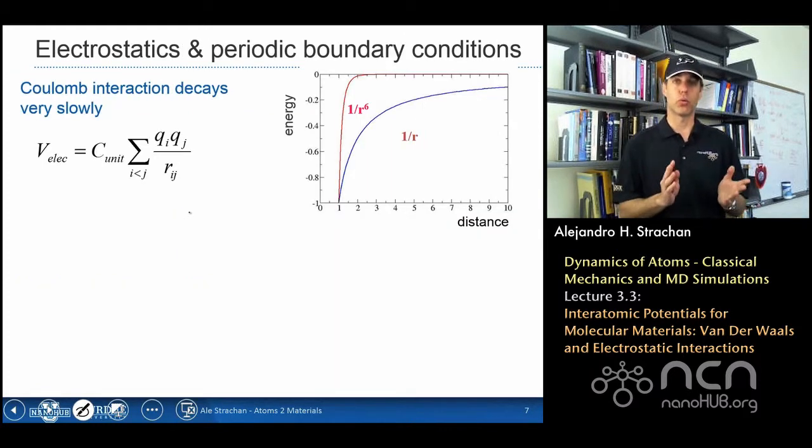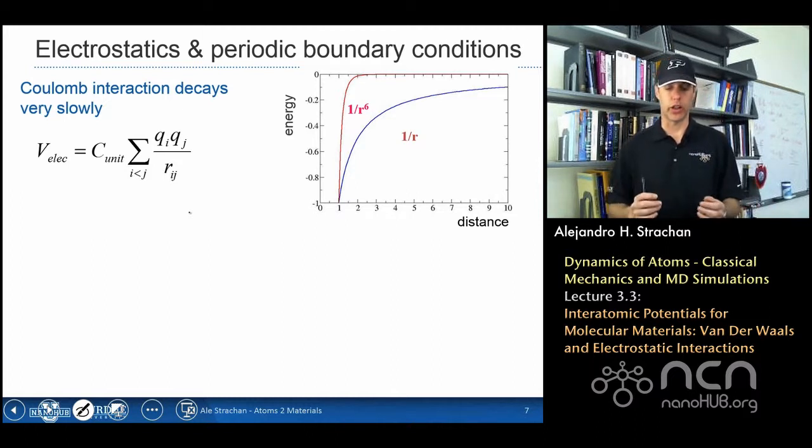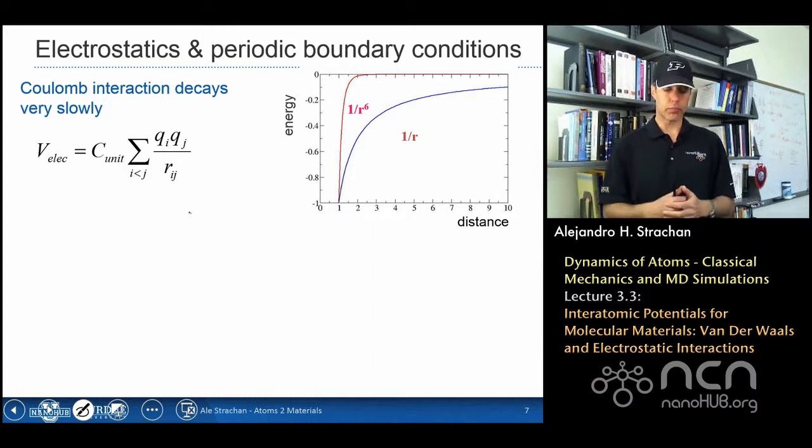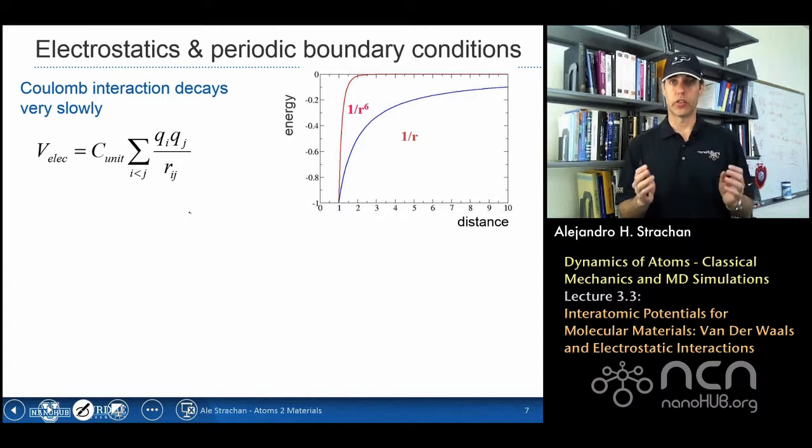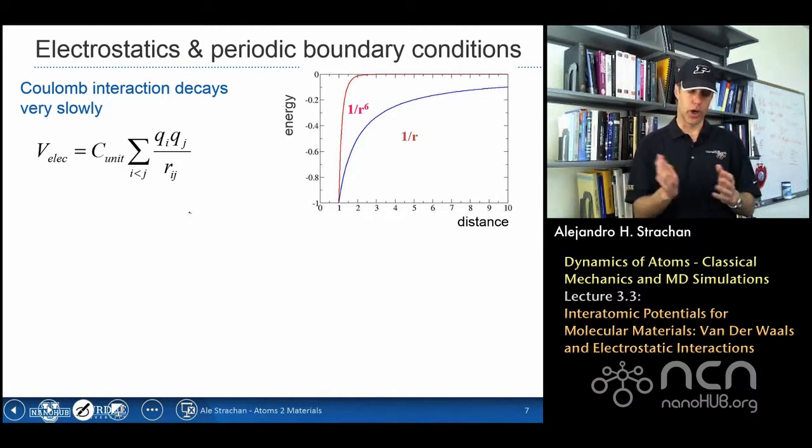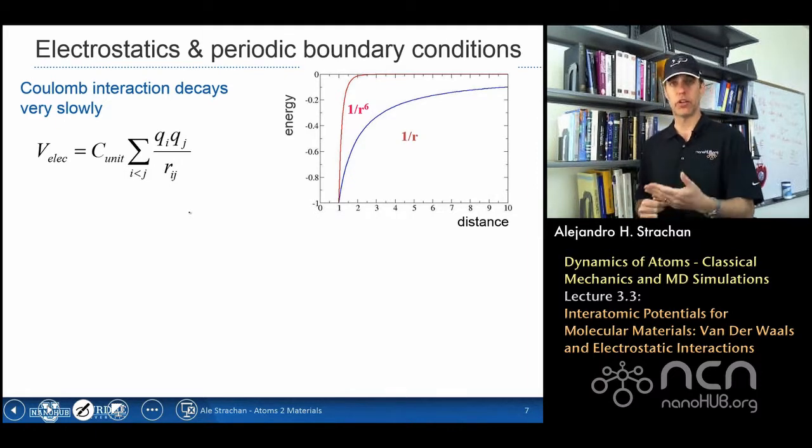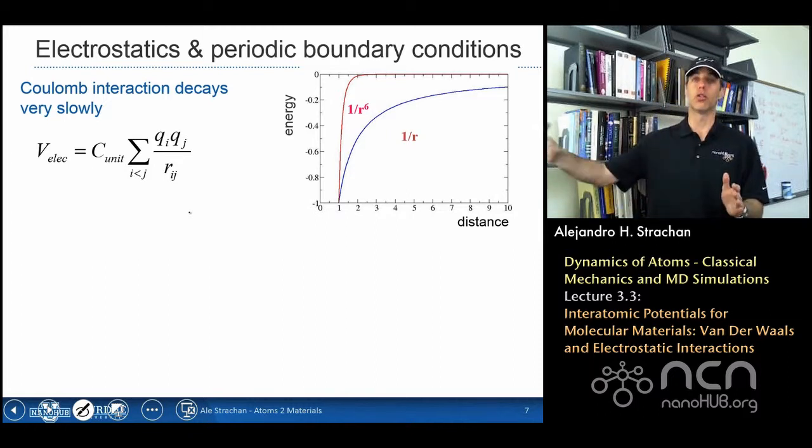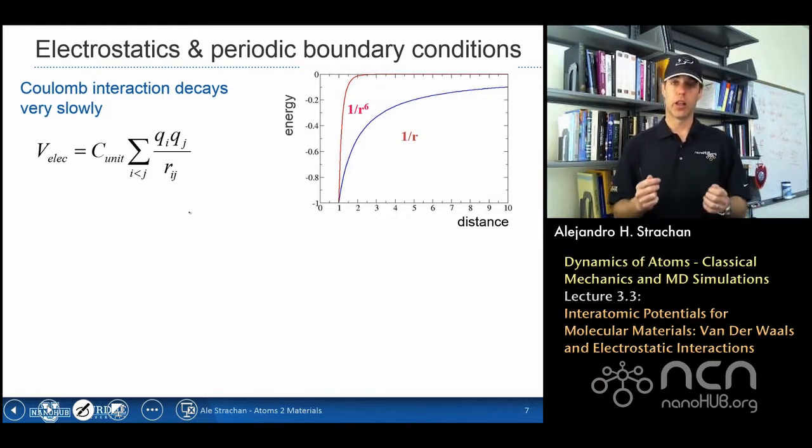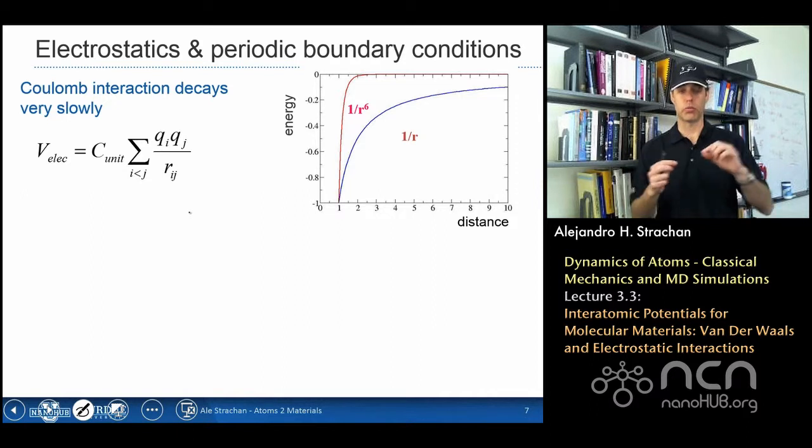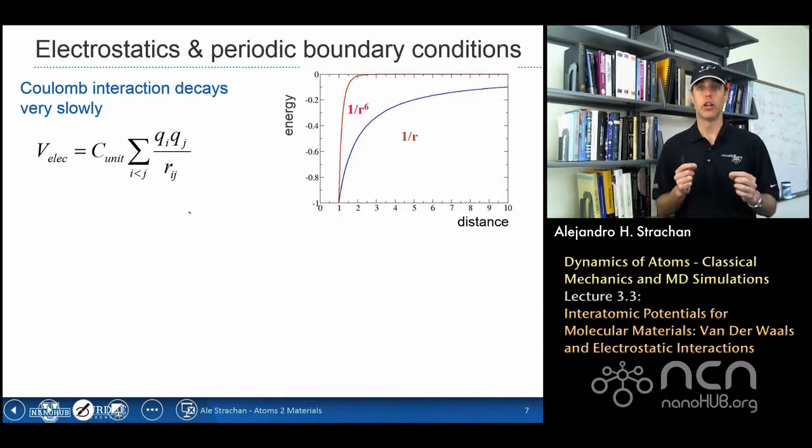Now, one thing to worry about when dealing with electrostatic interactions is the fact that the Coulomb energy decreases with separation very, very weakly. So what you see here in the plot is the comparison of 1 over r to the power of 6 and 1 over r, you can see that 1 over r goes down very, very slowly, and that means that we need to worry about long-range interactions, interactions of atoms that are very far away from one another.